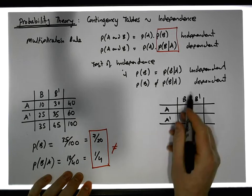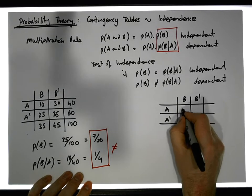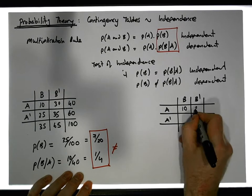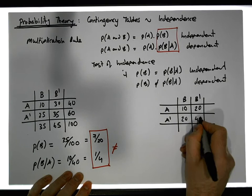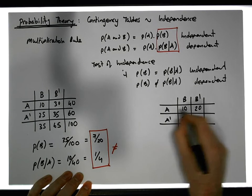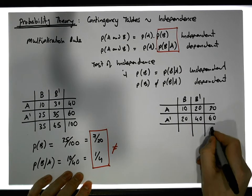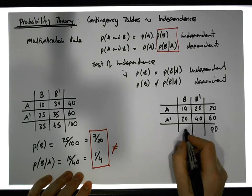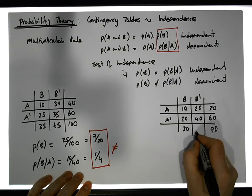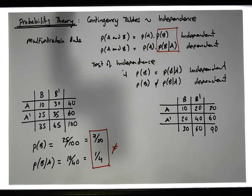You purchase A or you don't purchase A, you purchase B or you don't purchase B. Let's say we have 10, 20, 40, giving us marginal totals of 30 and 60, giving us a total of 90 overall. The column totals are 30 and 60, which gives us 90 again.